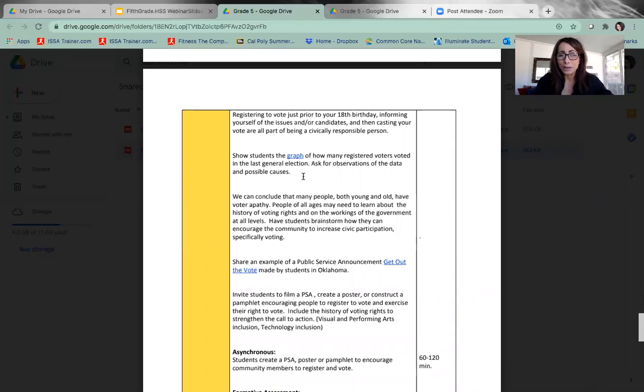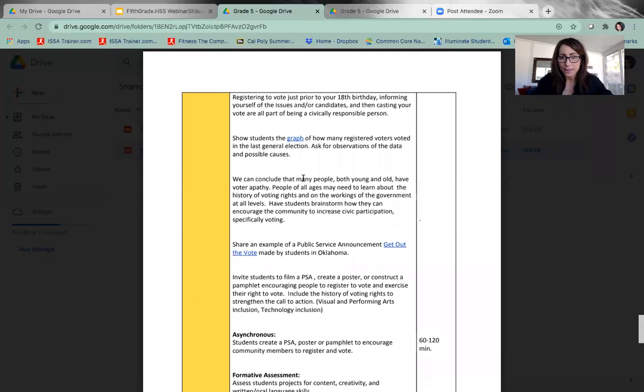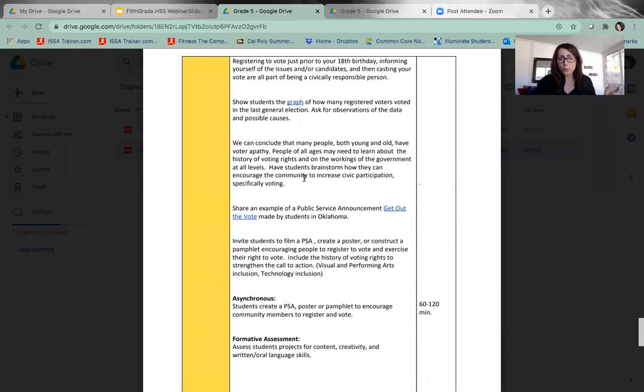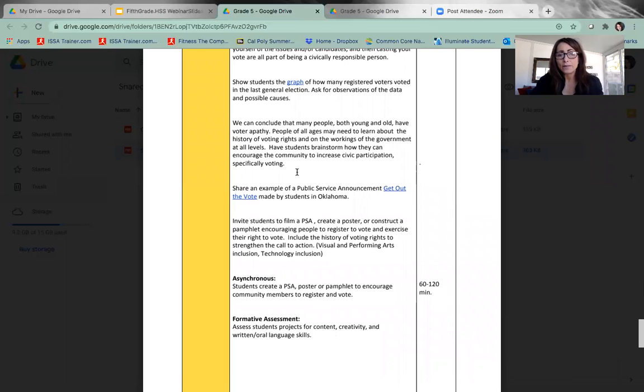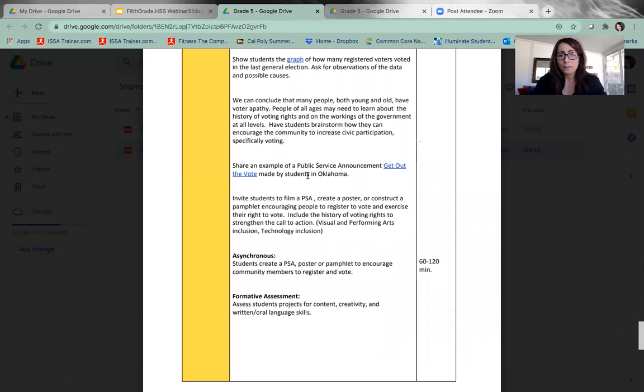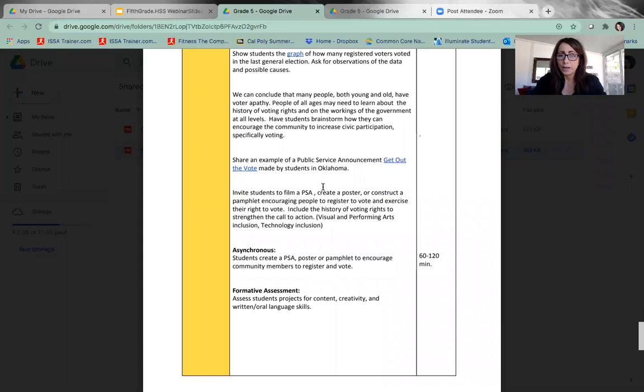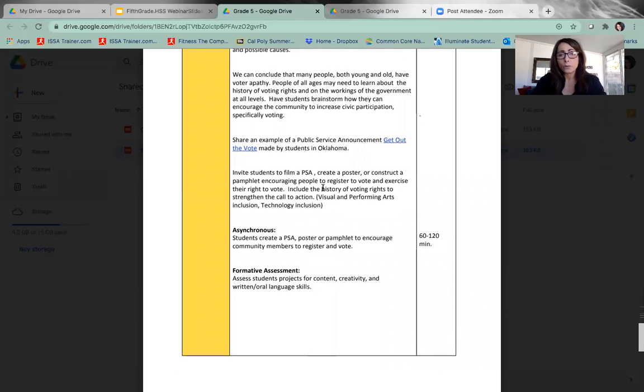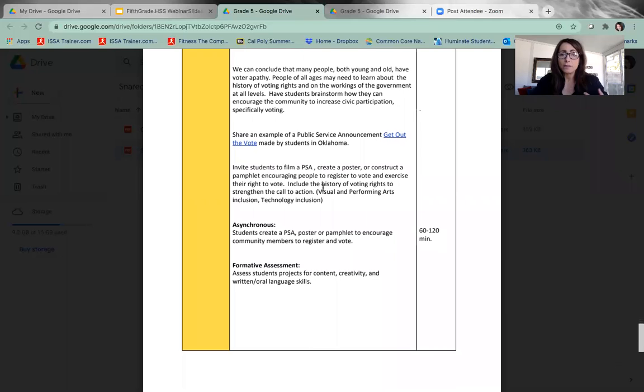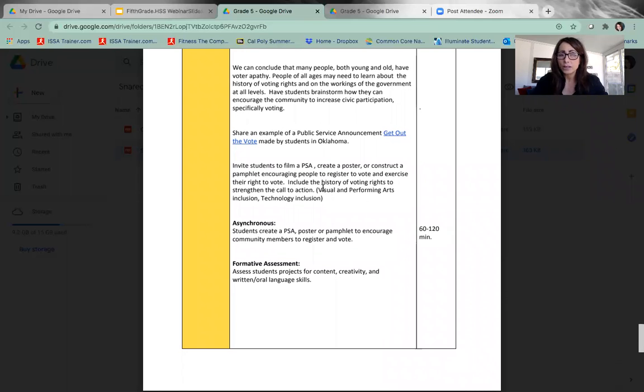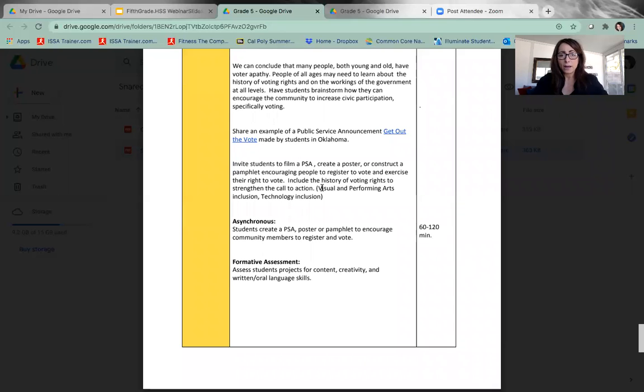What would really be cool is comparing those two. But we take a look at a graph of how many registered voters voted and take a look at that data so you have like a math inclusion there as well. When students do that they hopefully will conclude that people are not necessarily exercising their right to vote or they're registering to vote and that they will see a need to encourage adults over 18 to register to vote and so on. Their task is to create a public service announcement.